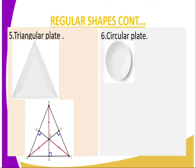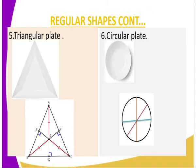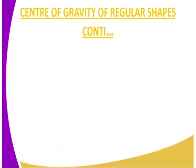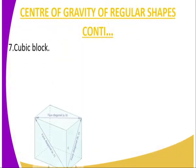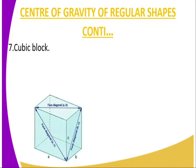For a circular plate or circular object, you find the center of gravity by constructing the diameters — their point of intersection, which is the center of the plate, gives the center of gravity. For a cubic block, you construct the diagonals, and their point of intersection gives the center of gravity.